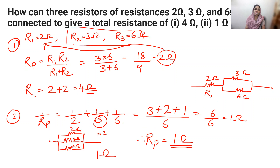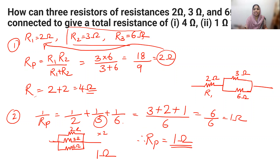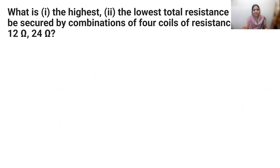To get a total of 4 ohm, the parallel combination of 3 ohm and 6 ohm (giving 2 ohm) must be connected in series with the remaining 2 ohm resistor, giving 2 plus 2 equals 4 ohm total.